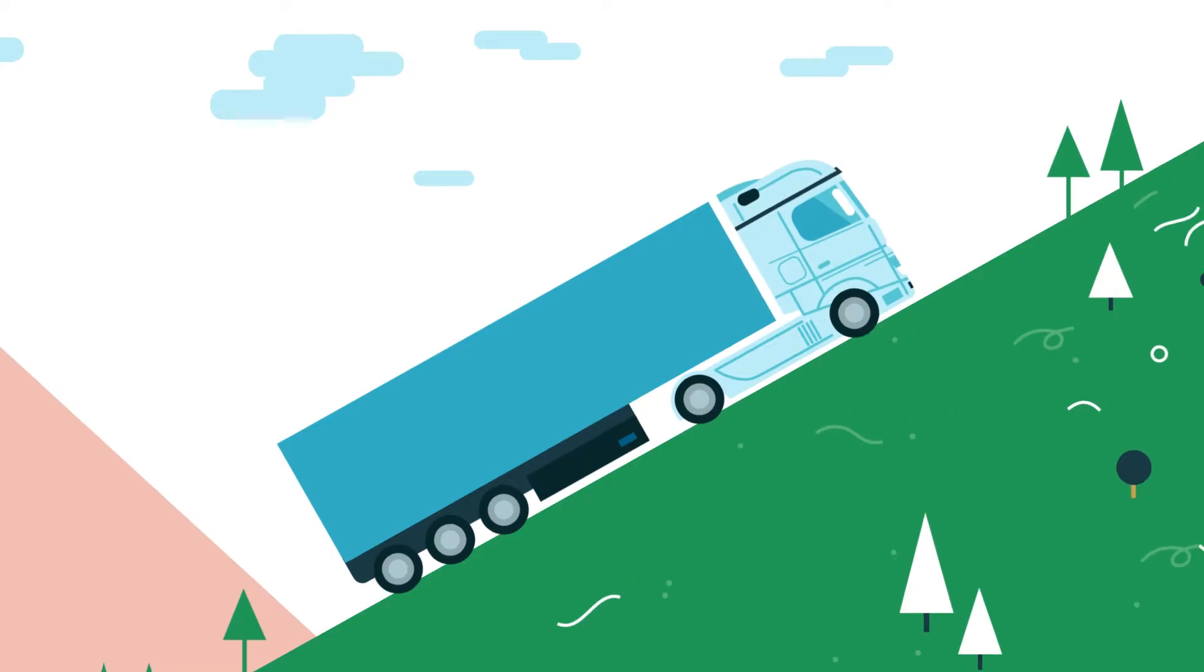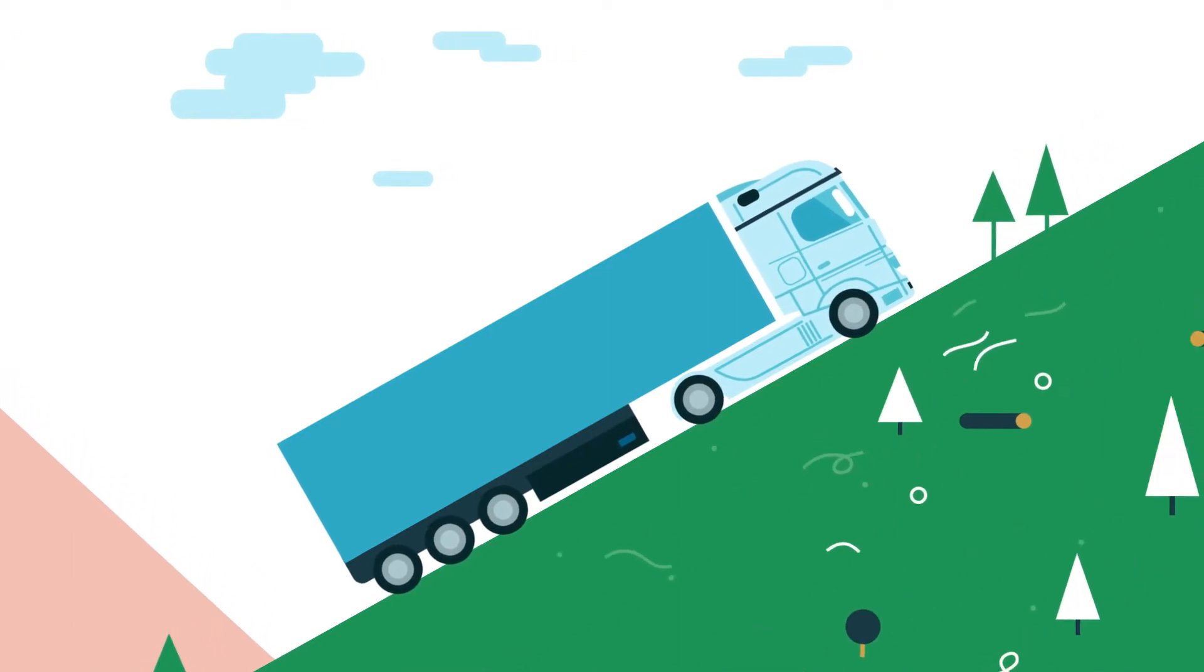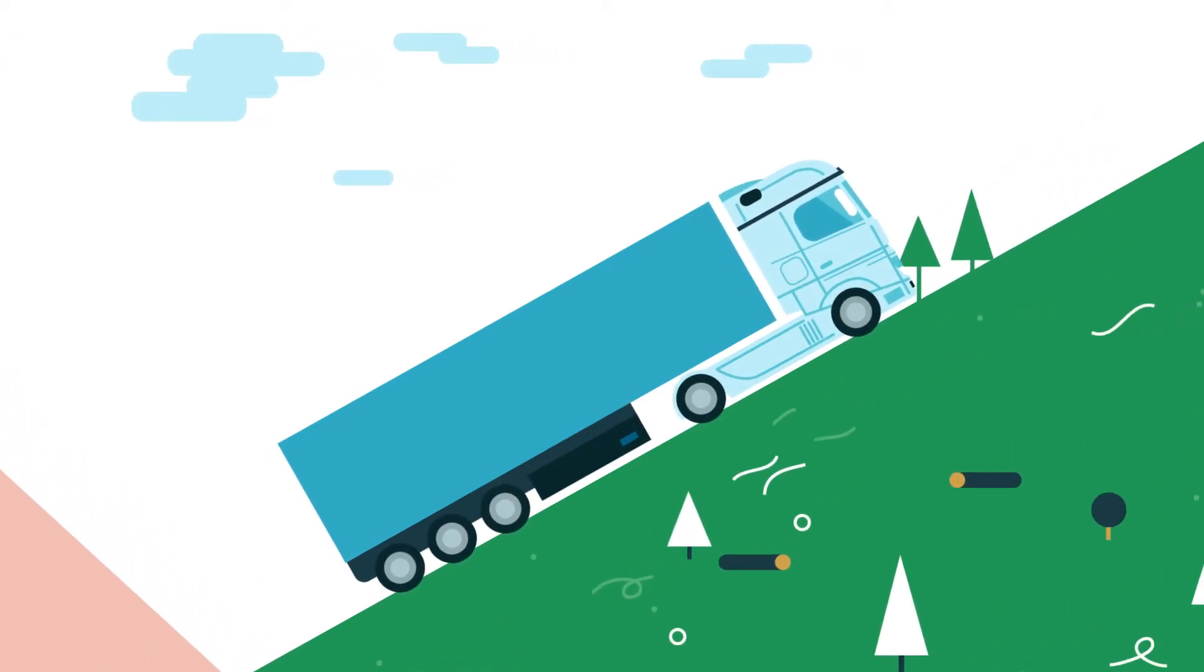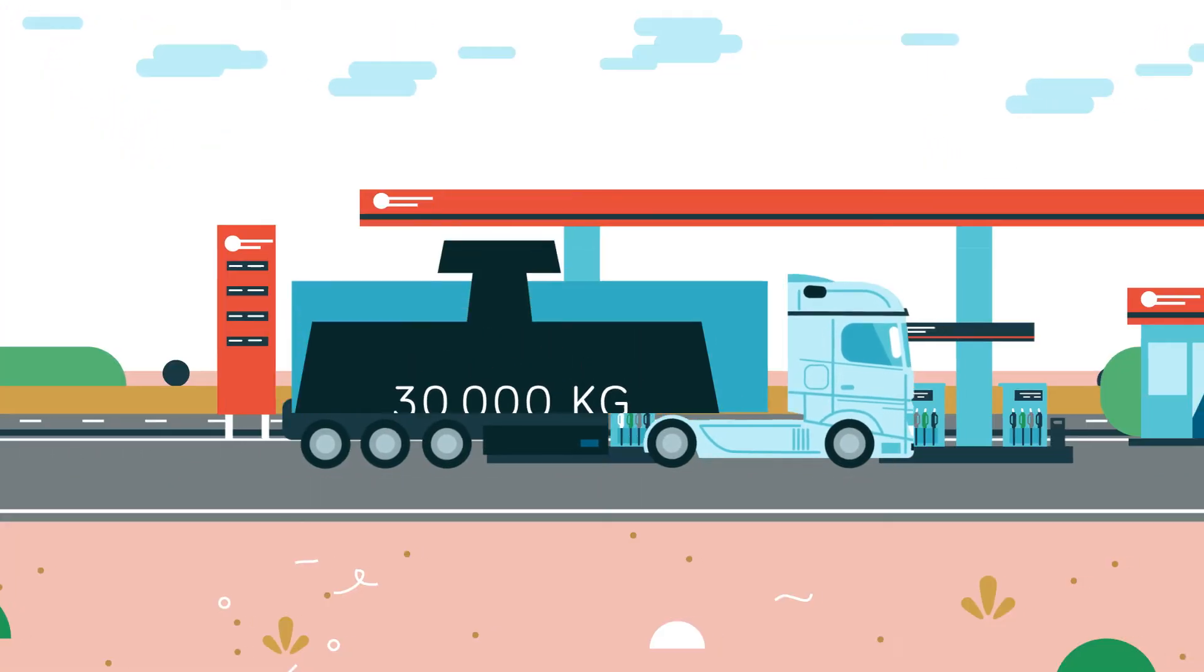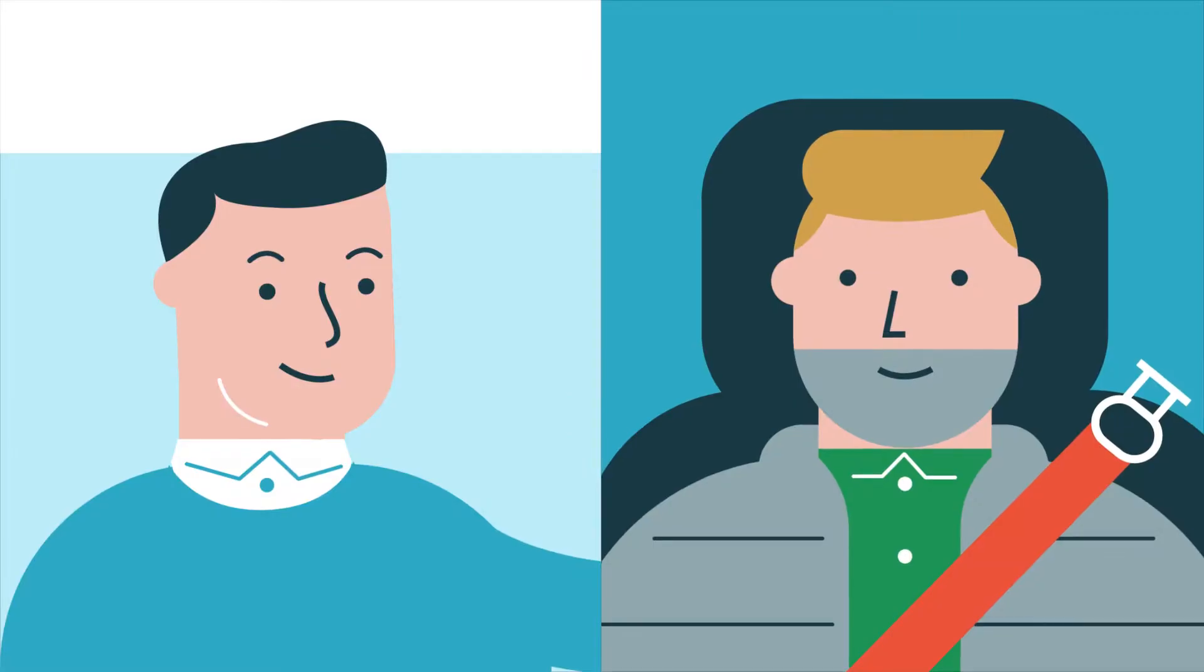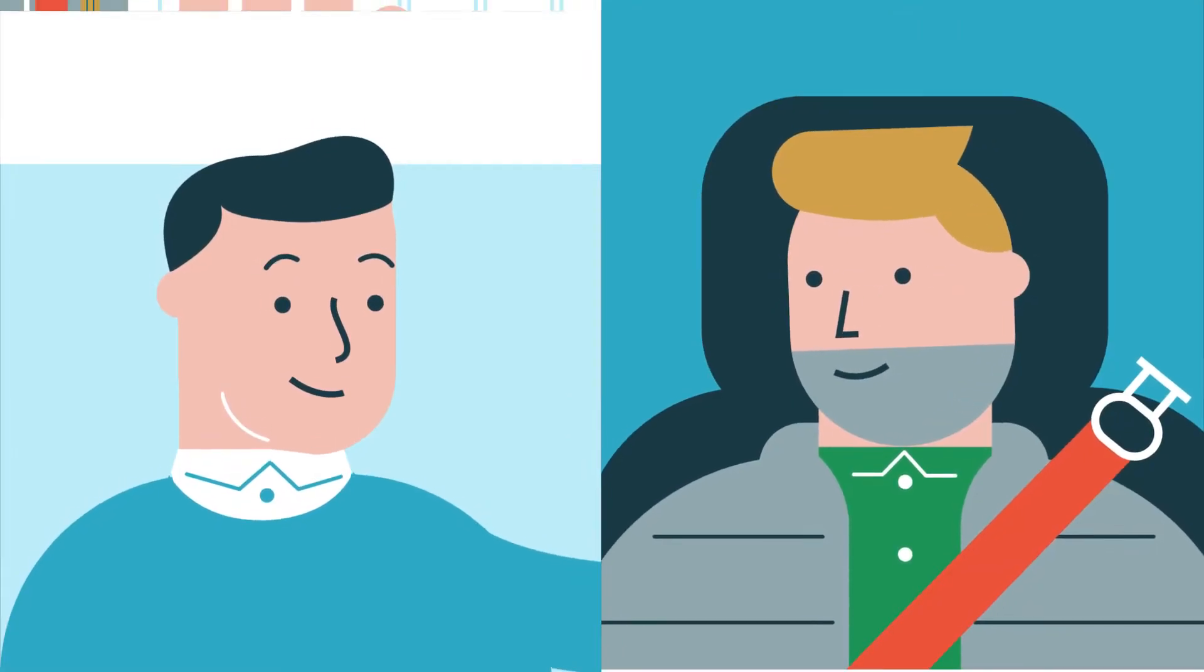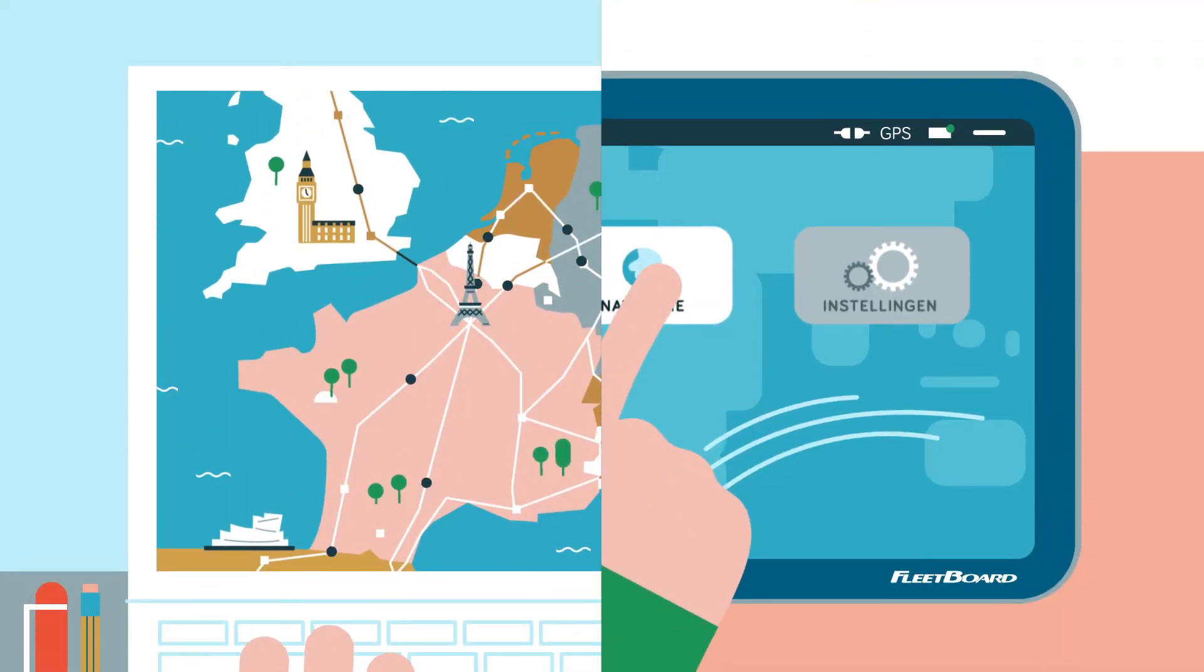Simple but smart. Because in order to make a fairer valuation, Fleetboard takes account of the gradient, the weight of the truck and the number of stops. So both you and your driver can clearly see where savings can be achieved at a glance.